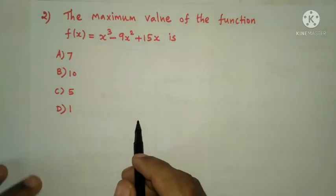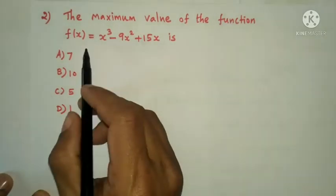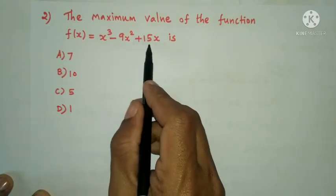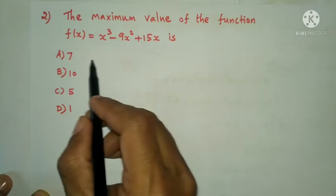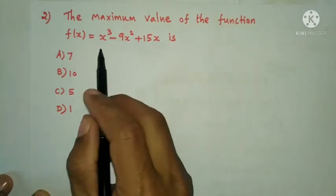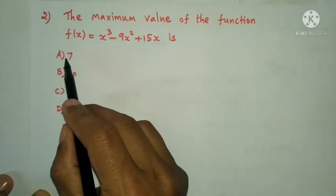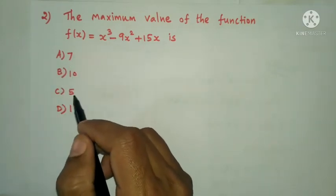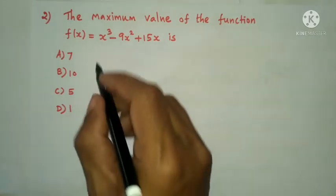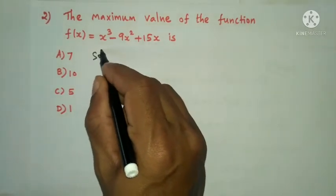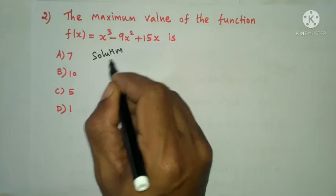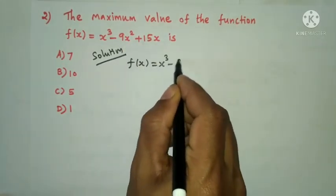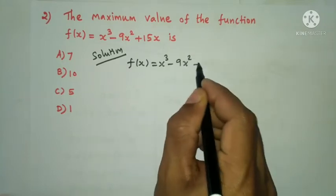Next question: the maximum value of the function f(x) equals x³ minus 9x² plus 15x. The options are: A) 7, B) 10, C) 5, D) 1.